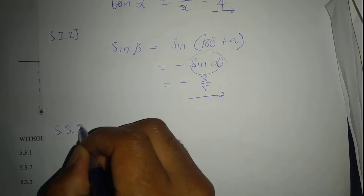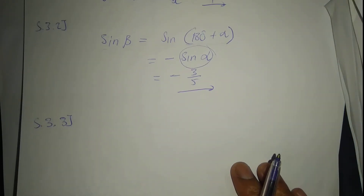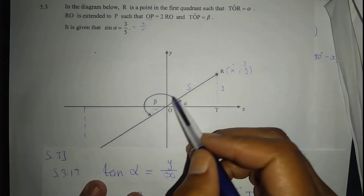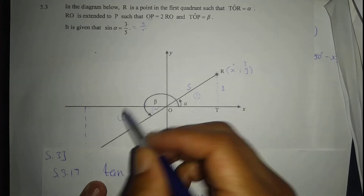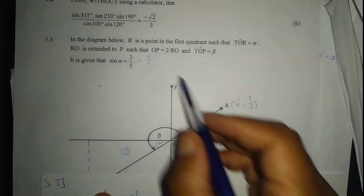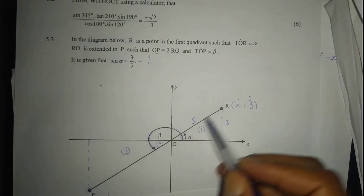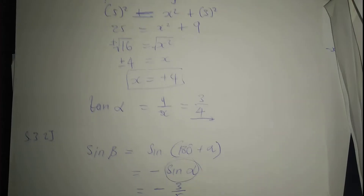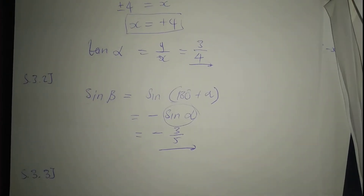For 5.3.3, calculate the coordinates of P. Triangle 1 and triangle 2 are proportional because OP equals 2 times OR. So the triangles are proportional with a proportionality factor K. We use the ratio of sin which is 3 over 5. Since the triangles are proportional, the same trigonometric ratios apply, with sides scaled by K.